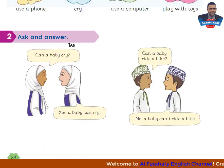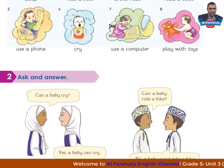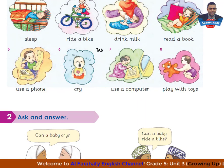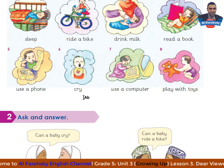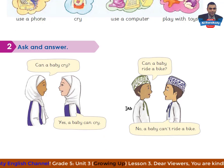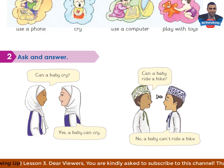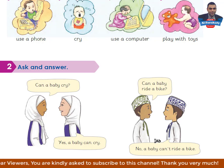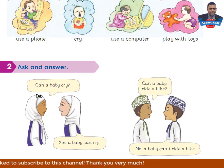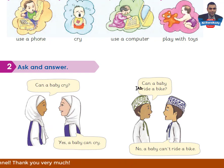Activity 2 - ask and answer. Now we will use the verbs here to make a question. Can a baby cry? Yes, a baby can cry. Can a baby ride a bike? No, a baby can't ride a bike. Now you are asked to make questions and answers. Let's listen to these two questions. Listening 3.5.